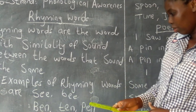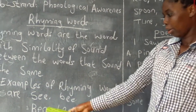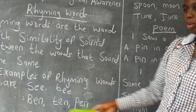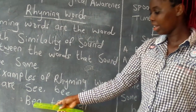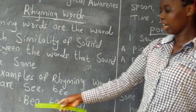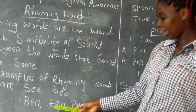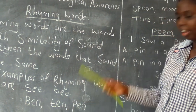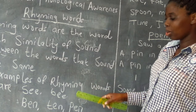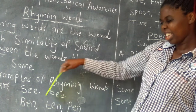The next examples are 'Ben', 'ten', 'pen'. You can see we have E, E, E at the end of every word. So the E makes these words rhyme.